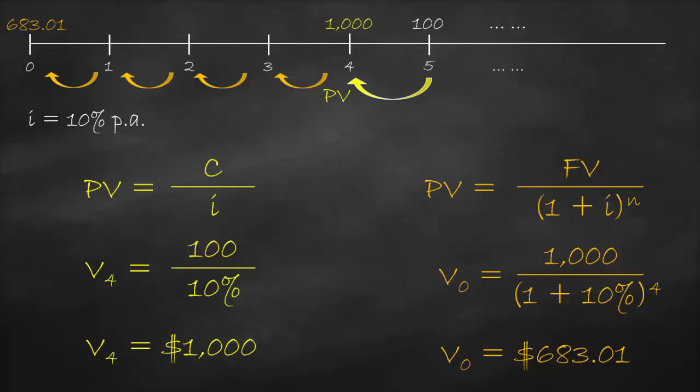My next question: we moved along the timeline, so I'll give you three options — which is better at an effective annual interest rate of 10%? Option one: receive $683.01 today. Option two: receive $1,000 in year four. Option three: receive $100 every year starting in year five, continuing forever. At 10% effective annual interest rate, all three options give exactly the same value, so you will be indifferent.